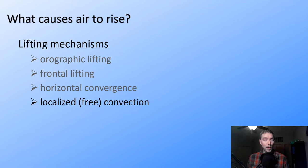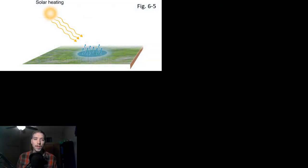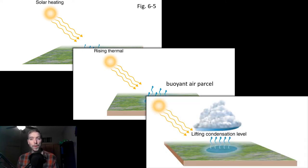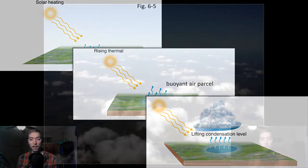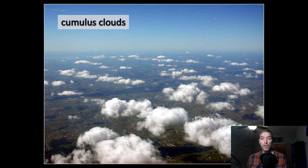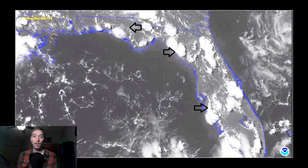Last, we have localized or free convection. The sun heats a body of water or land surface, producing rising thermal energy — a buoyant air parcel. Once it rises and cools enough to reach the lifting condensation level, condensation occurs and cloud development begins. We typically see cumulus clouds forming as a result of localized free convection. Along the coast of Florida, for example, you can see these pockets of cumulus cloud formation developing across the surface.